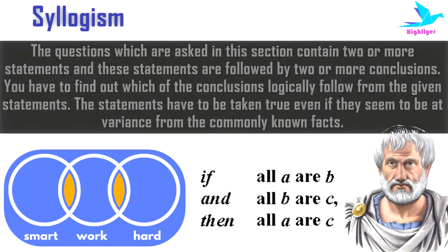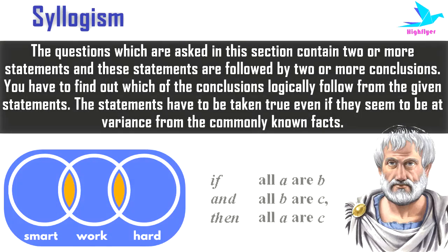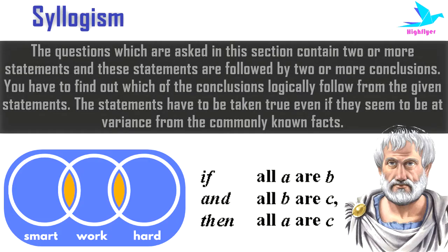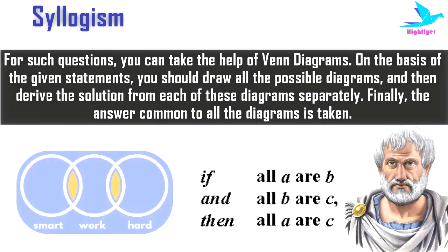The questions asked in this section contain two or more statements, and these statements are followed by two or more conclusions. You have to find out which of the conclusions logically follow from the given statements. The statements have to be taken as true even if they seem to be at variance from commonly known facts. To solve questions on syllogism, you can take the help of Venn diagrams.